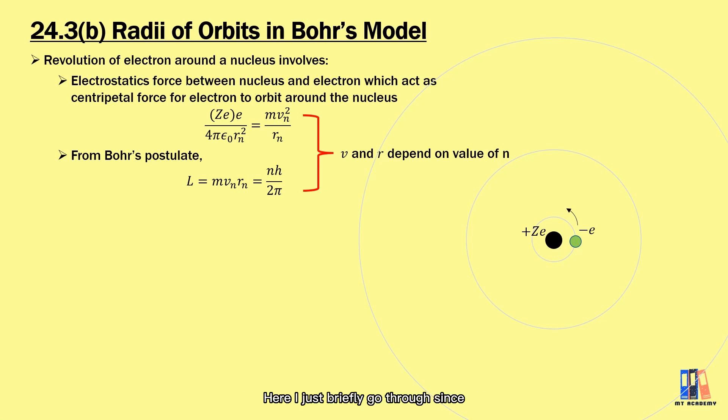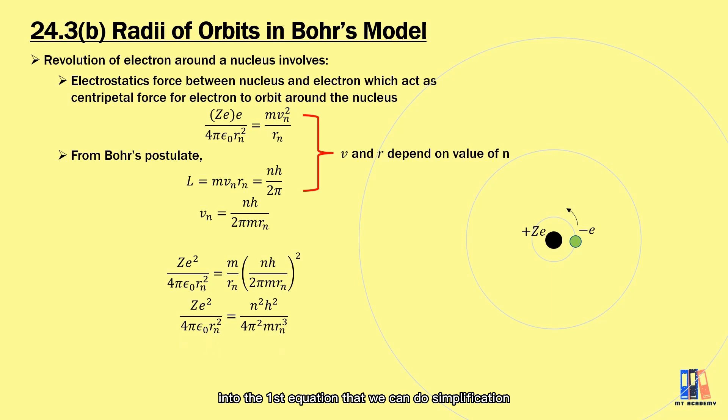So here I just briefly go through since some of you may do it differently. Here I will start from the second equation to get the expression of velocity which is nh over 2πmr. Then we can substitute into the first equation, do simplification and obtain the expression of radius equal to ε₀n²h² over πmZe². In short, you can see the radius of orbit is proportional to the square of n.